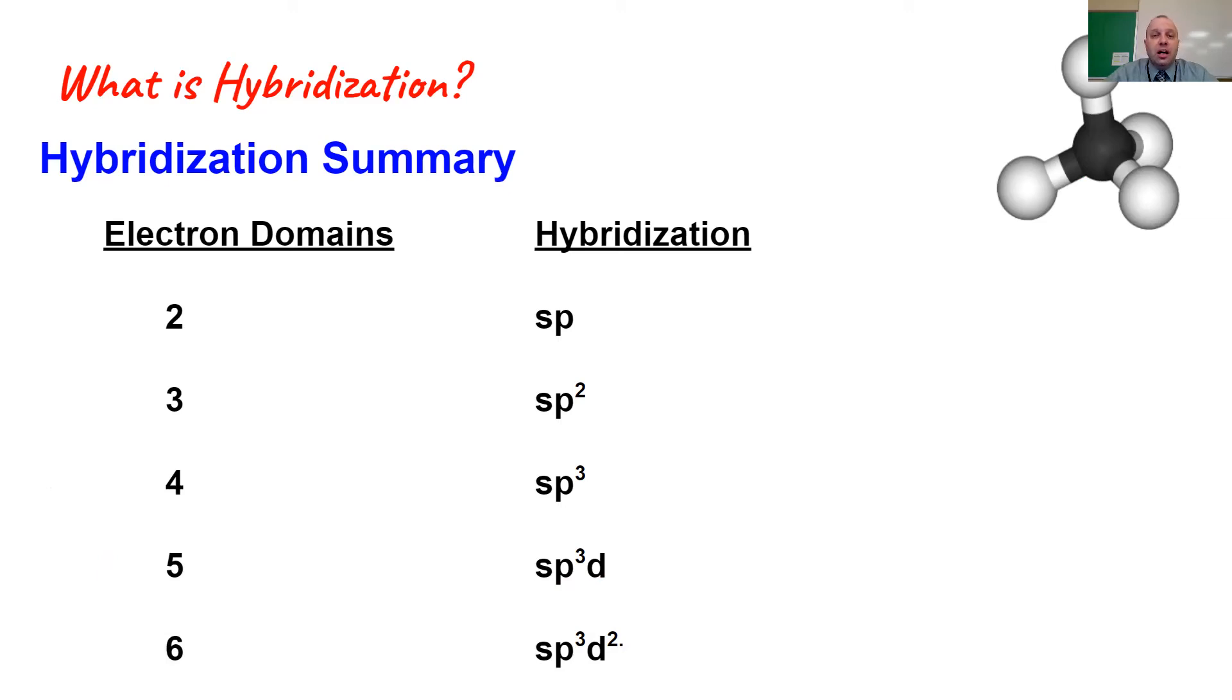So number of electron domains determines hybridization. Know that the superscripts—the one and the one here—will add up to give you the electron domain. So the one superscript on s and the two on p is how we get three electron domains, and so on. The number of electron domains should be able to dictate for you what the hybridization is.